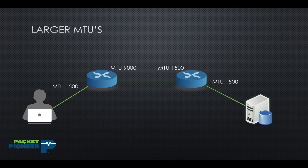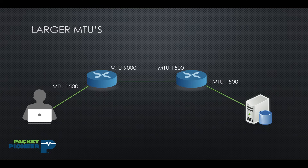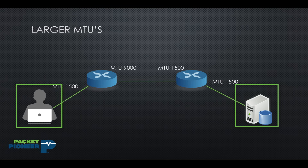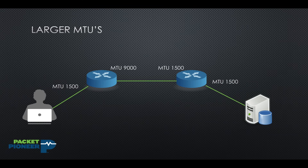In some cases we want to adjust that MTU. Take for example an environment that's using jumbo frames. You'll notice on the router on the left its MTU toward the other router is set to 9000 bytes, meaning that interface can support much larger frame sizes. However, the other router is set differently — that's an MTU mismatch. Just because you have an MTU of 9000 along the path doesn't mean the two endpoints will make use of it. The sending servers also need to be able to make use of a larger MTU.